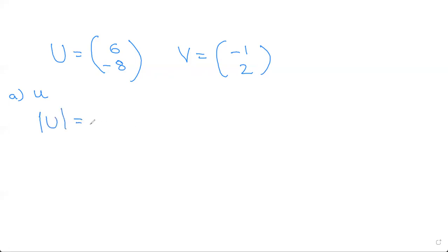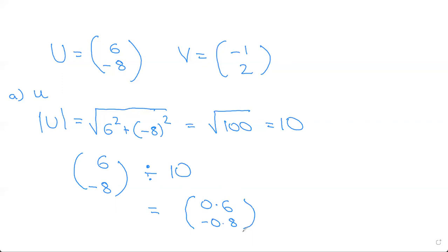This is root of 36 plus 64 which is root 100 which equals 10. Now we have to find it in terms of u and in the direction of u. You will do (6, -8) and divide this by 10. For division, you divide 6 by 10 and -8 by 10, so that will be (0.6, -0.8). This is the unit vector in the direction of u.